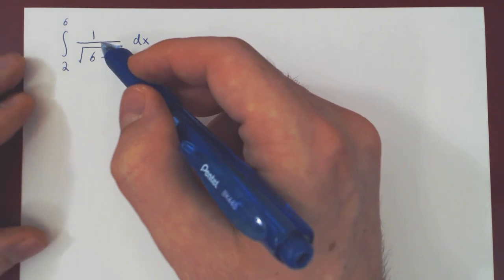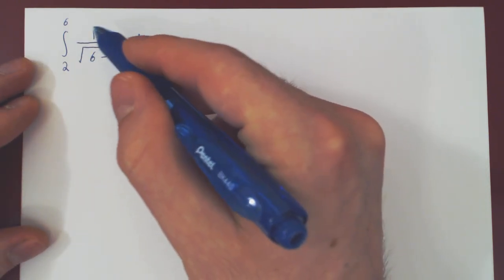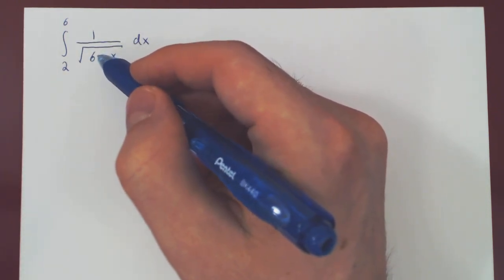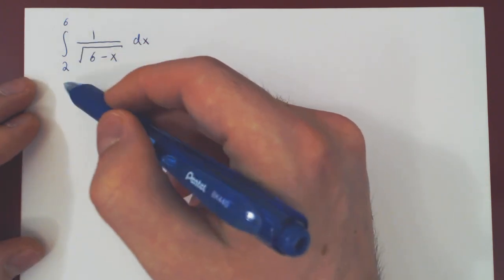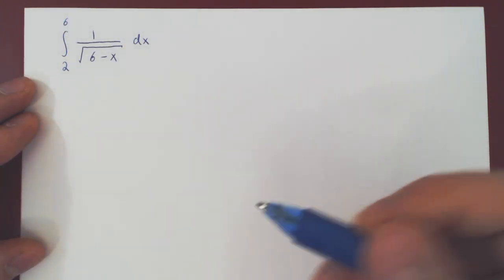And if you recall, type 2 means that the function we are trying to integrate has at least one discontinuity on the interval of integration. Well, let's see if that's the case here.